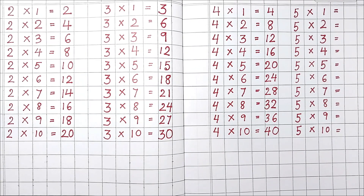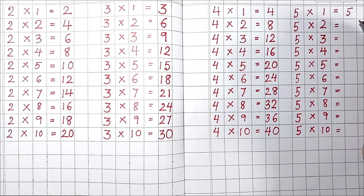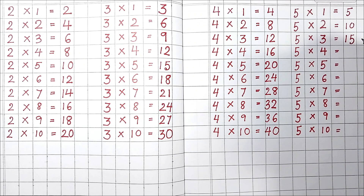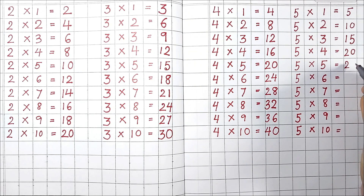Table of 5. 5 1's are 5. 5 2's are 10. 5 3's are 15. 5 4's are 20. 5 5's are 25.